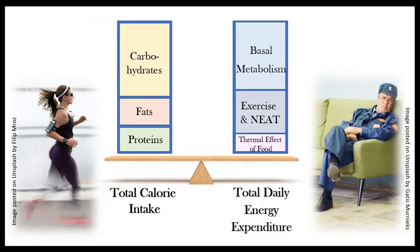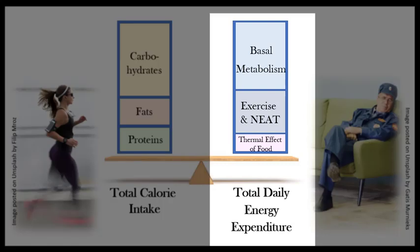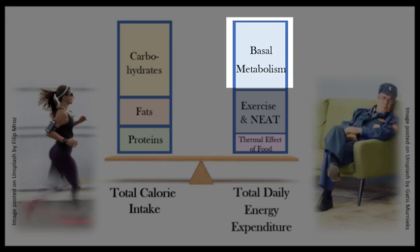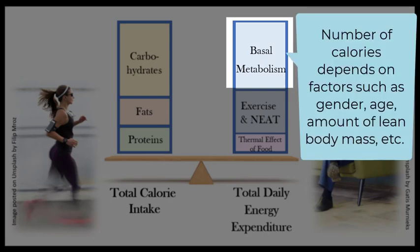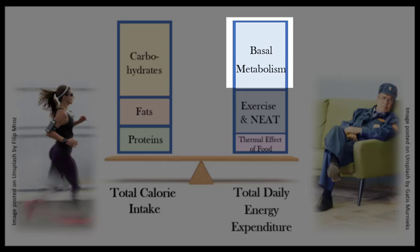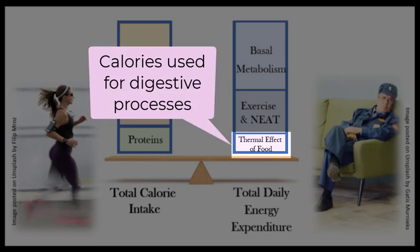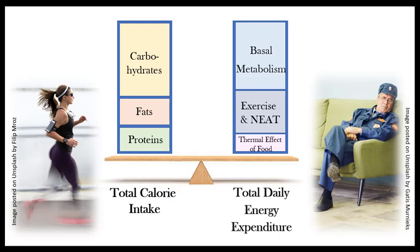Let's look at the calorie expenditure side of the equation. How do we spend our energy? Our total daily energy expenditure falls into three categories. The majority of the energy is used for basic life processes, such as making new cells, communication between neurons, making hormones, etc. These expenditures fall into a category called basal metabolism, and factors such as your gender, your age, lean body mass, and your genetic profile can influence how many calories that takes. The other categories are the thermal effect of food — basically, that's the calories needed for your digestive processes — and physical activity.